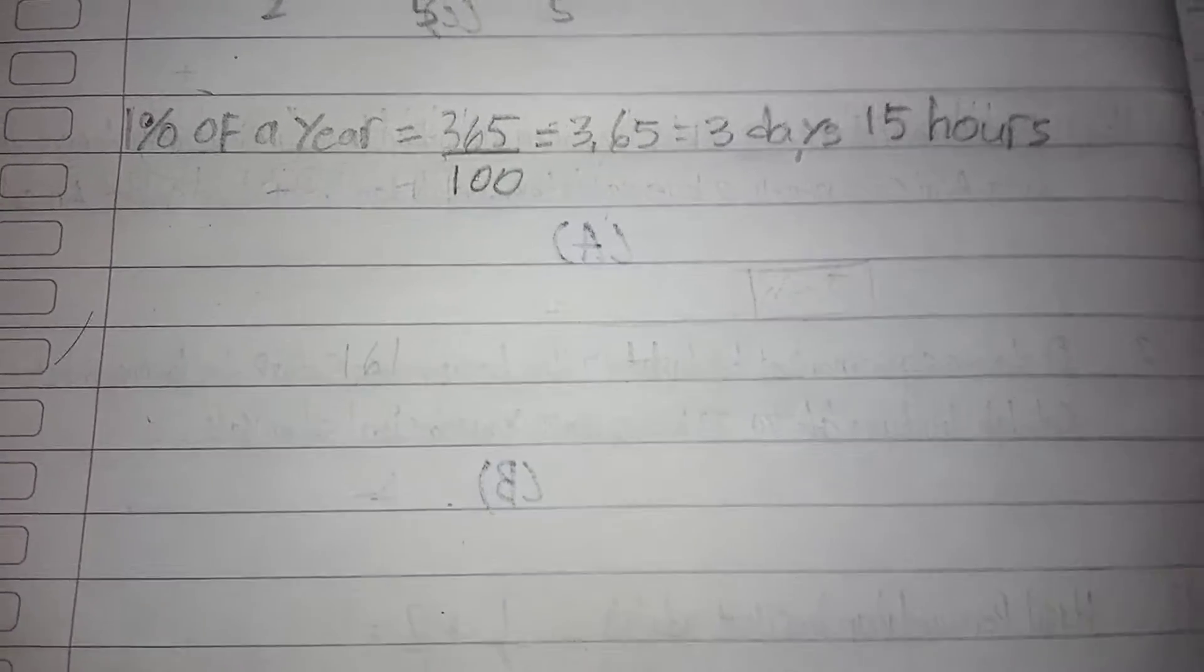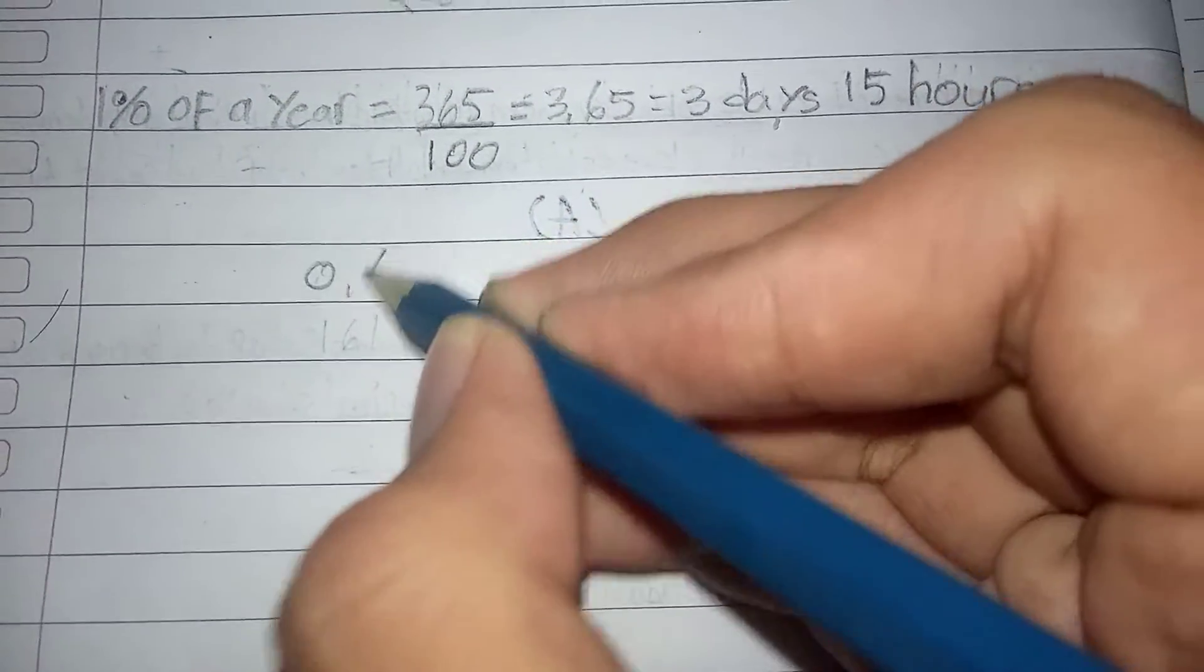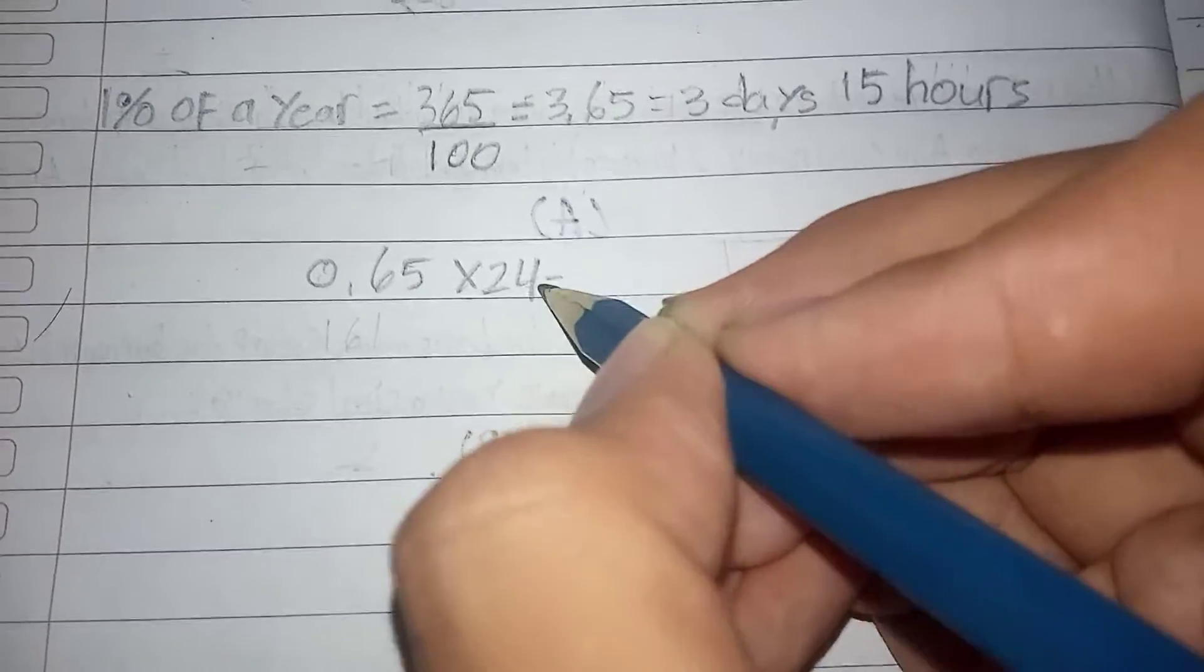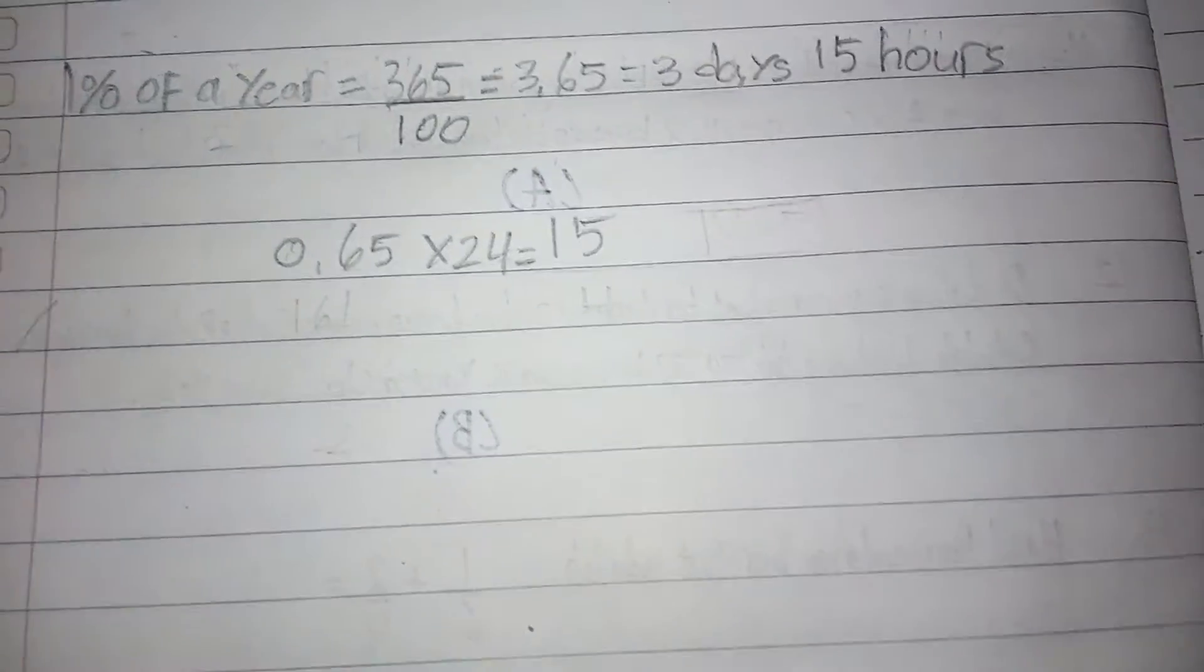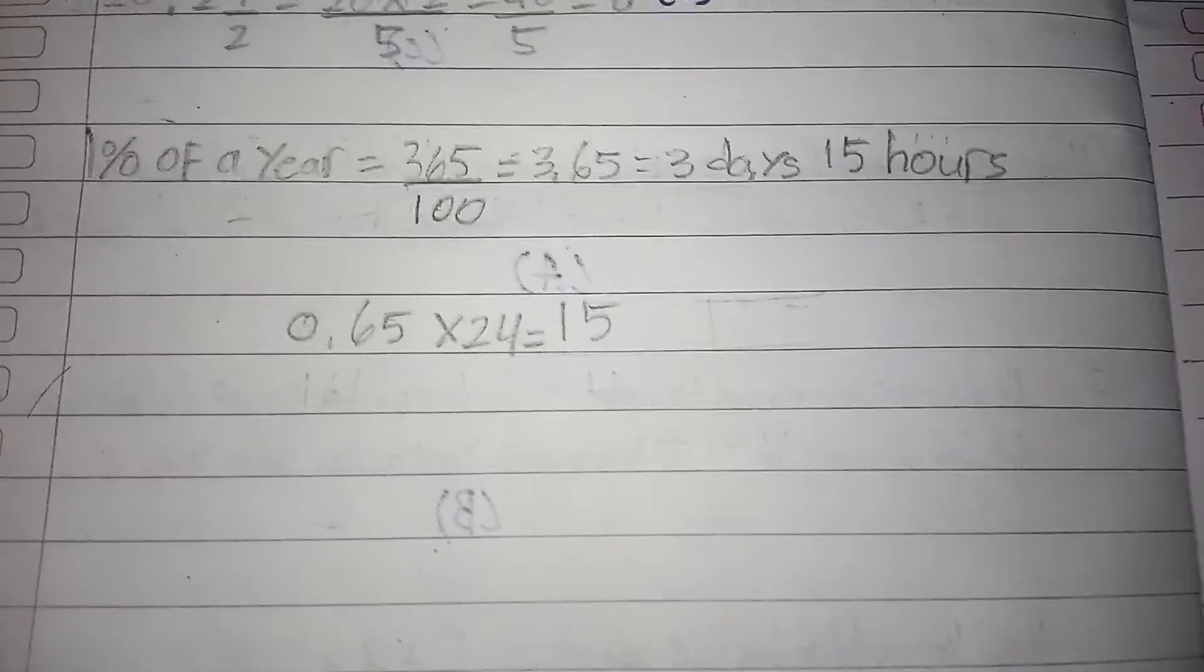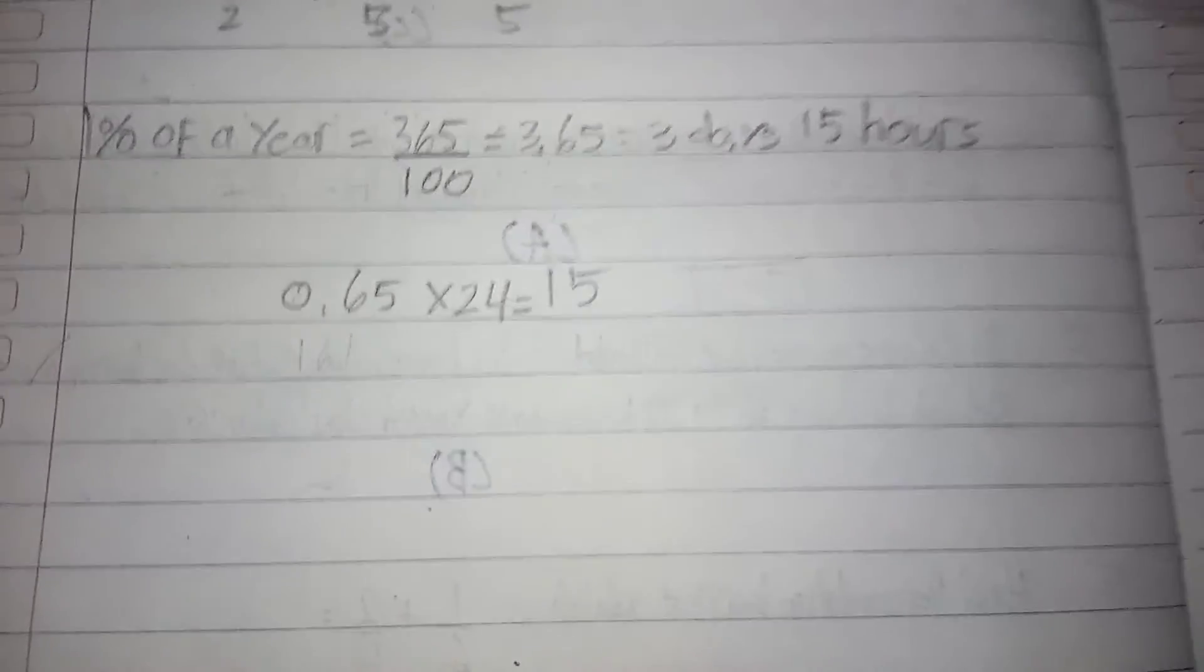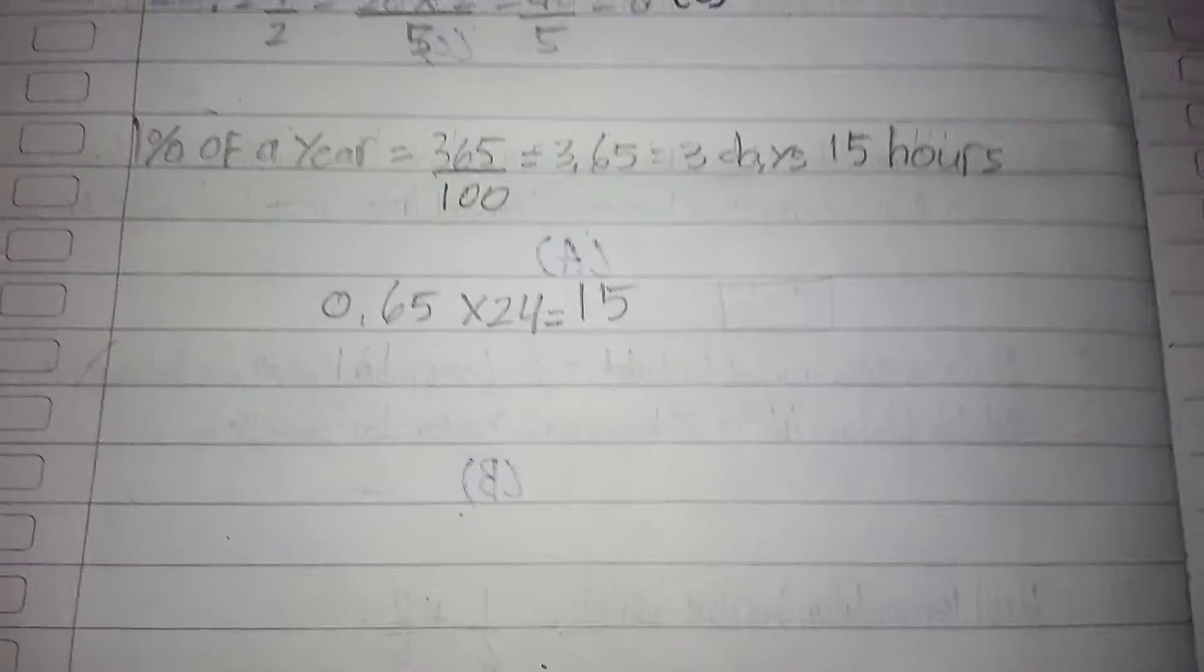Okay, why is it 15 hours? Because, you know, that is 0.65 times by 24, yeah, it's just equal to 15. And then after that, so now it's gonna be the minutes here.